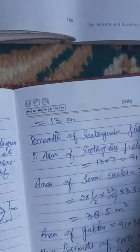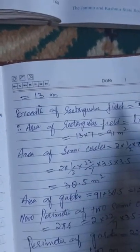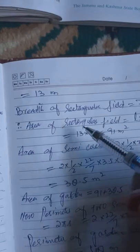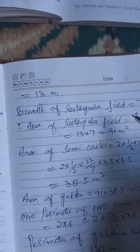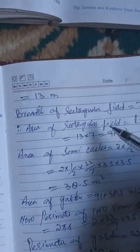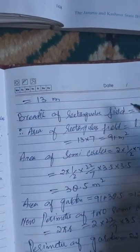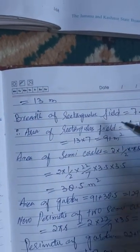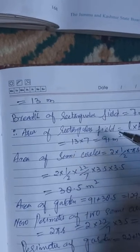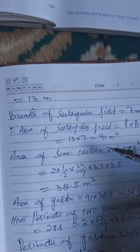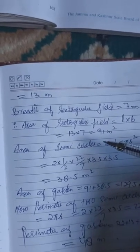The length of the rectangle field is equal to 20 minus 3.5 plus 3.5, which equals 20 minus 7, so 13 meters. The breadth of the rectangle field is 7 meters. Area of rectangle field equals length into breadth: 13 multiplied by 7 equals 91 meters square.